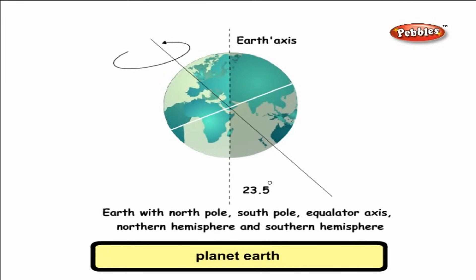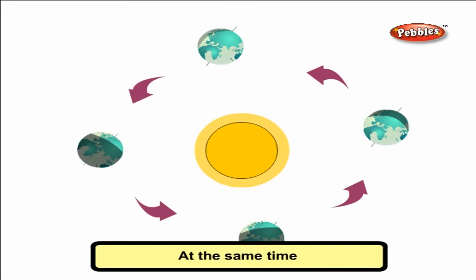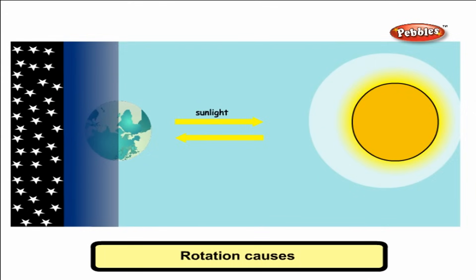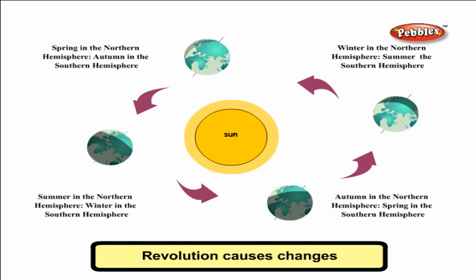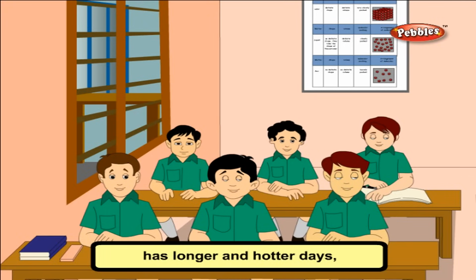Our planet Earth is slightly slanted and rotates on its own axis — this is called rotation. At the same time, it also revolves around the sun — this is called revolution. Rotation causes day and night. Revolution causes changes in the seasons. The part of Earth that comes closer to the sun has longer and hotter days — that is summer.